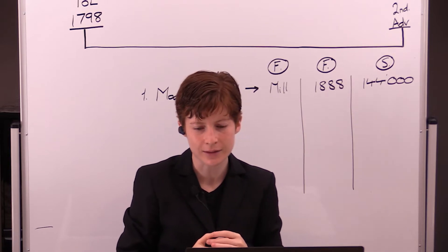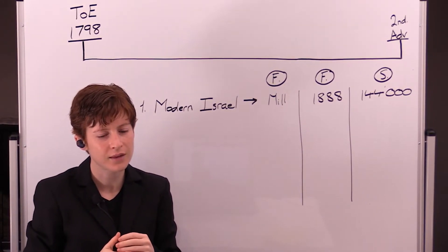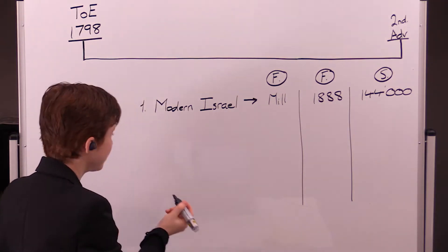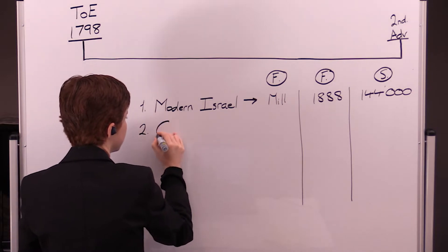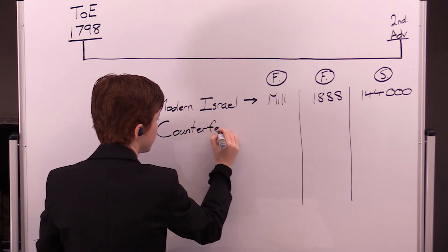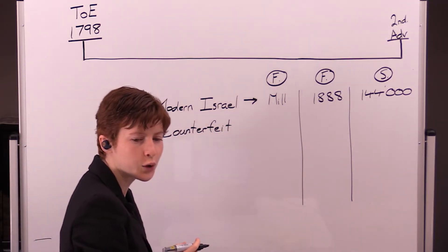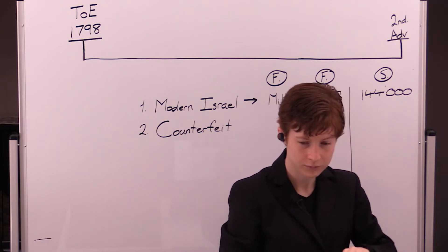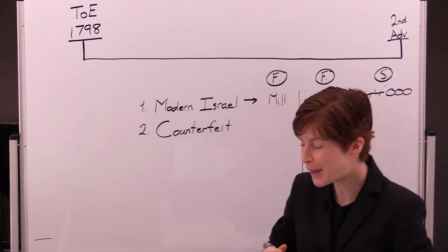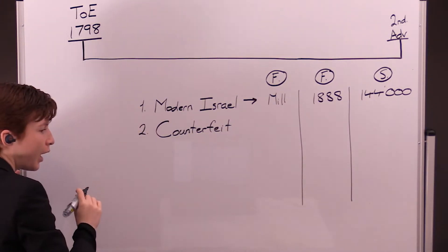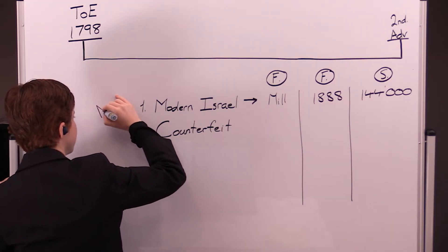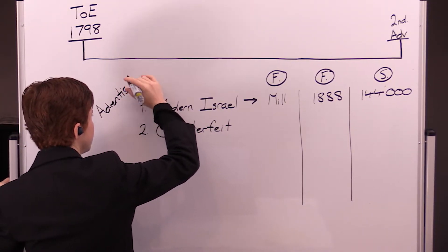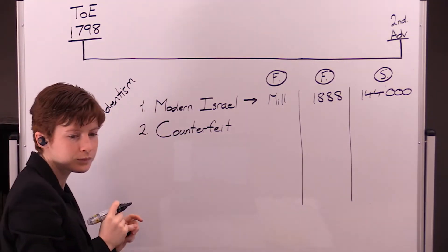What's the second structure we looked at? The counterfeit. What's the theme of modern Israel? Who's the subject matter? God's people. I'm just going to call it Adventism. Who's the subject for the counterfeit? Papacy.